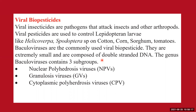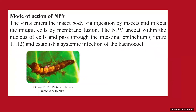The next category of microbial pesticides is viral biopesticides. Viral biopesticides are pathogens that attack insects and other arthropods. They are used to control lepidopterous larvae like Helicoverpa and Spodoptera species on cotton, corn, sorghum, and tomatoes. Baculoviruses are the most commonly used viral biopesticides — they are extremely small and composed of double-stranded DNA. Baculoviruses include three varieties: Nuclear Polyhedrosis Virus (NPV), Granulosis Virus (GV), and Cytoplasmic Polyhedrosis Virus (CPV).